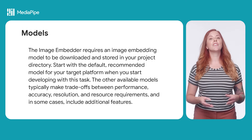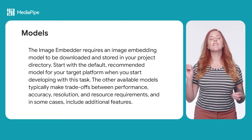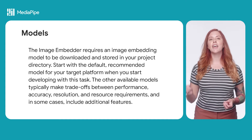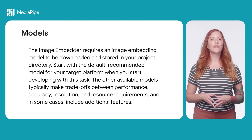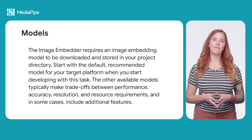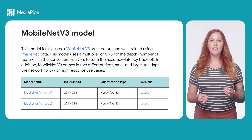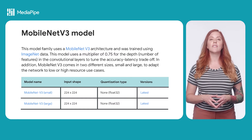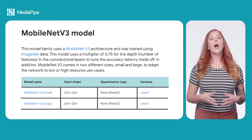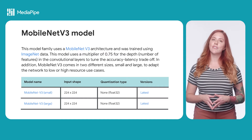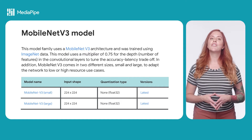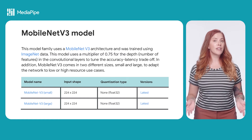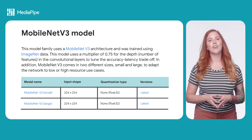To get started using the image embedding task for the web, first take a look at the available models. The recommended model uses a MobileNet V3 architecture and was trained using ImageNet data. ImageNet is a visual database of more than 14 million images designed for vision research use cases like object recognition. MobileNet V3 comes in two different sizes, small and large, to adapt the network to lower and high resource use cases. Model options might change over time, so definitely check the docs for the latest details.